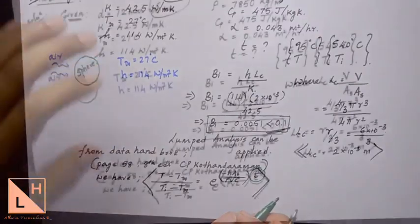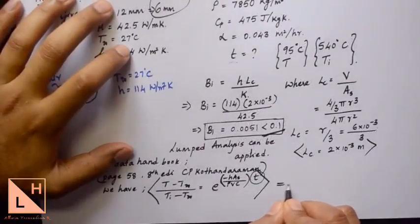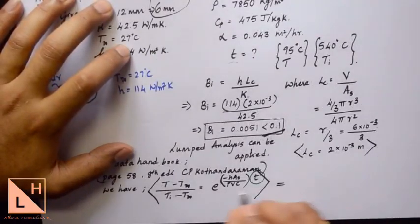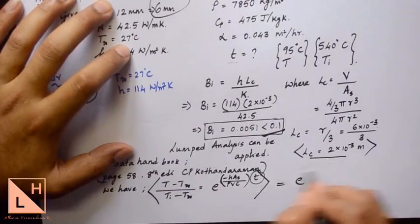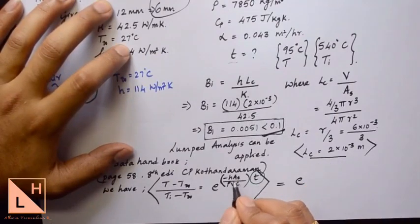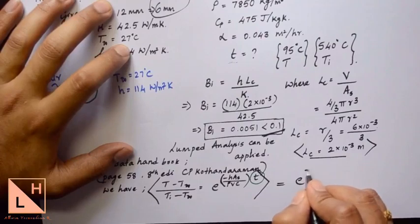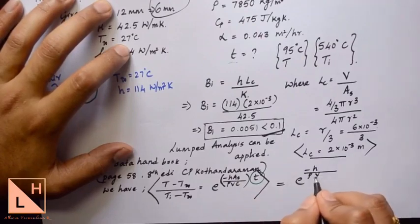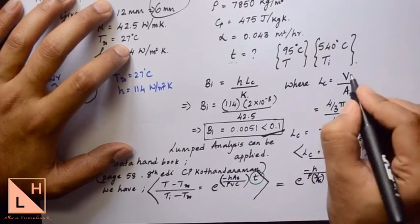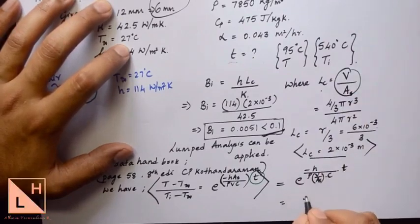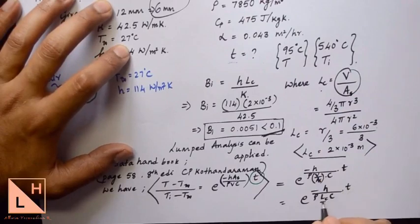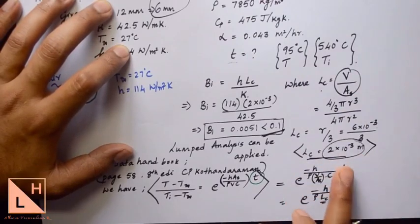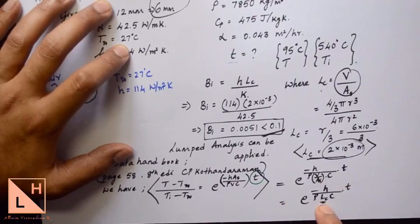Let us substitute and find the value of t. The right-hand side can be rewritten because we know the value of Lc. We can rewrite the exponent in terms of Lc: bring As to the denominator of V so we will have V/As, where Lc equals 2×10⁻³. We substitute that in.